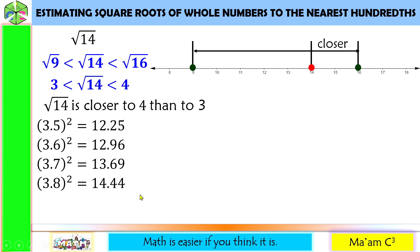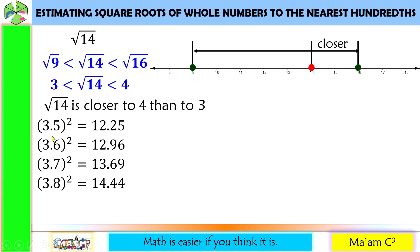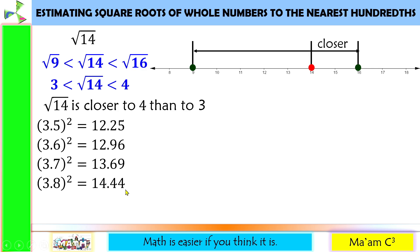If you are asking how I solved these numbers, I simply multiply the number by itself. For example, 3.5 squared is equal to 3.5 times 3.5. You may refer to our previous lesson on multiplying decimals. Now, I'm going to determine the two closest numbers to 14, and those are 13.69 and 14.44.